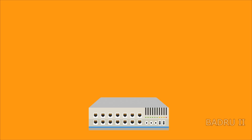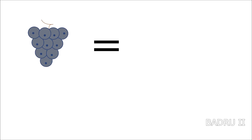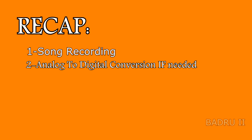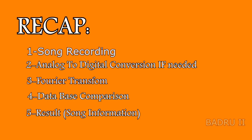The next step for the application is it plays a comparison game to try and match it with the information it has, and as soon as it finds the match it fetches the information of the songs associated with your recording. So let's do a very quick recap: you record the song, it converts it to digital if needed, then the Fourier transform is applied, and then it compares it with the database and fetches the song, getting back to you with the information.